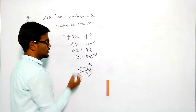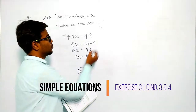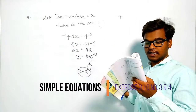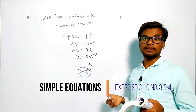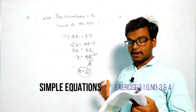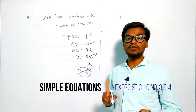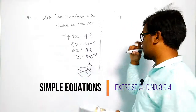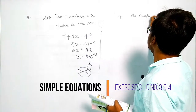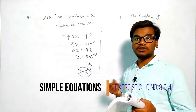Next, the fourth question: if we subtract 22 from 3 times a number we get 68, find the number. So let the number be y. The number equals y.